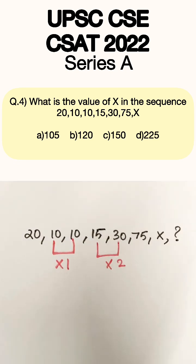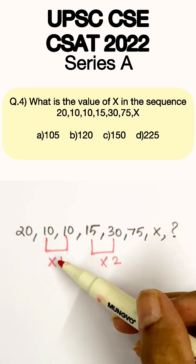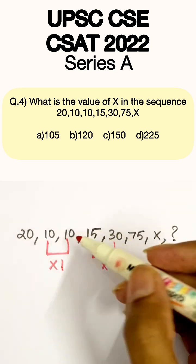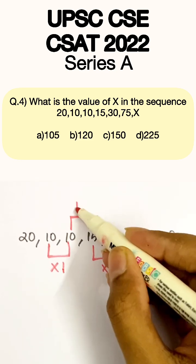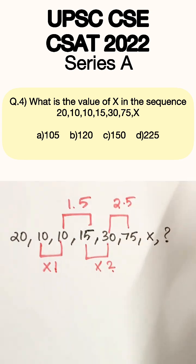So now you can establish a relation between 30 and 75 or 10. And now that you have found out 1 and 2 here, this should be somewhere in between 1 and 2, right? So this is 1.5 and 30 into 2.5 will give you 75.